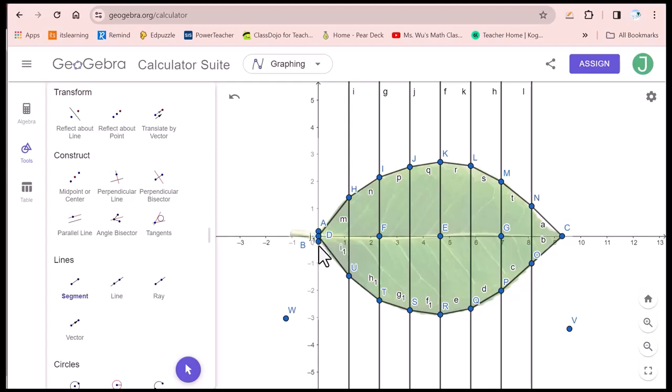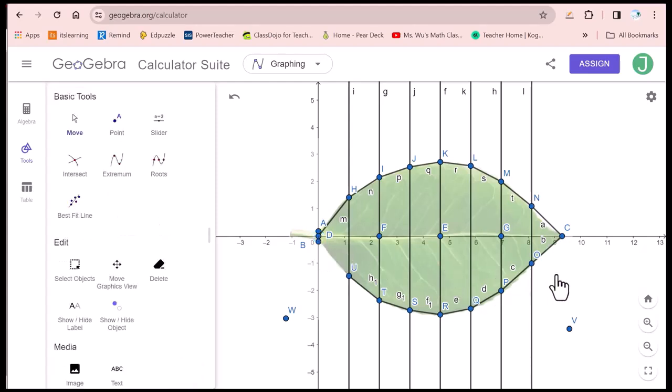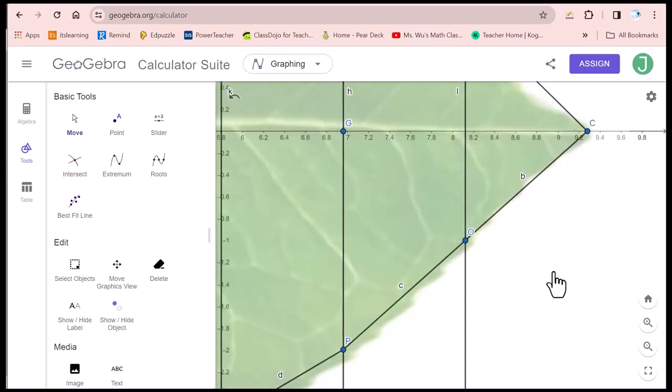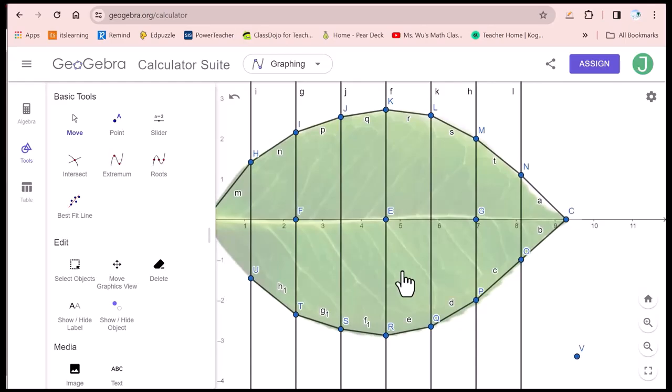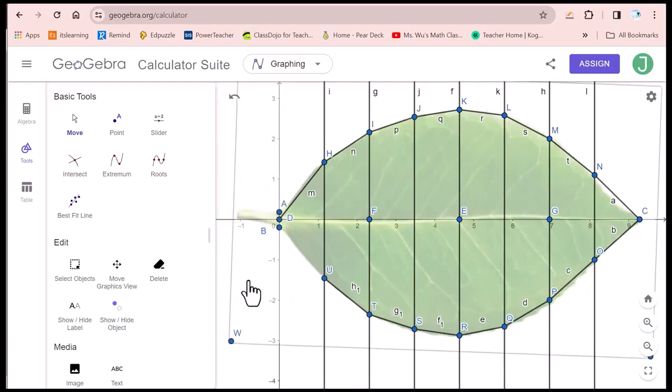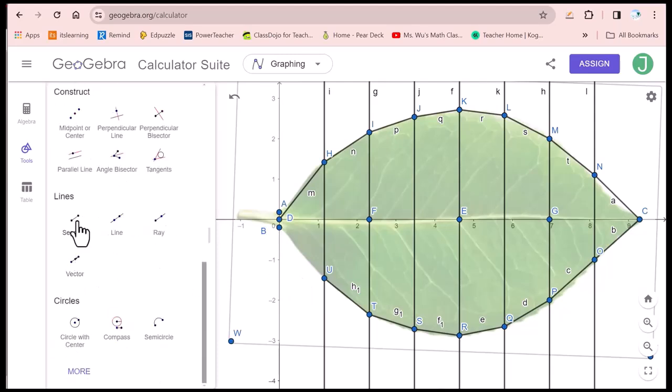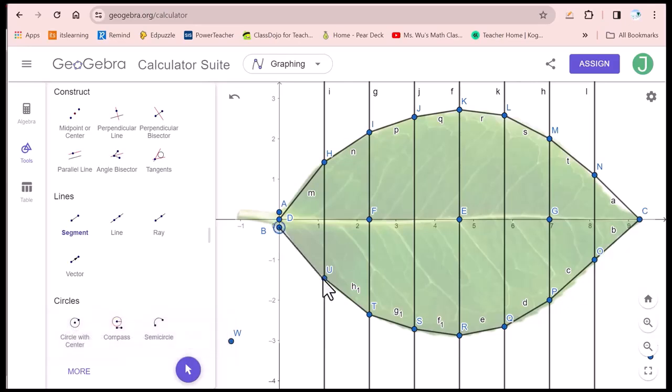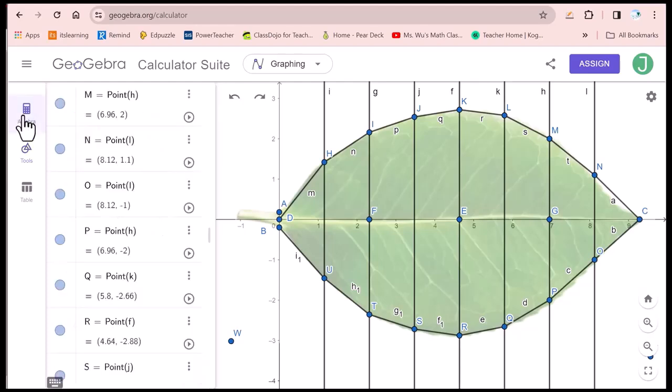We got U, D instead of U, B. We need to zoom in this image so that we can connect U, B instead of U, D. You will zoom in this picture. I connect B, U. Then I noticed D, H was connected instead of A, H. Go to this algebra. Find D, H. Delete.